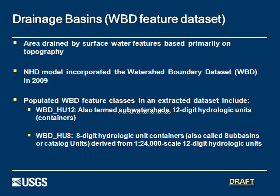Drainage basins, as far as the area of drainage, are contained in the NHD and the WBD feature set. These are what some people like to call hydrologic units, and there are three populated feature classes within the WBD: your 8-digit, 10-digit, and 12-digit HUC systems. These are basically the sub-basins, watersheds, and sub-watersheds that are populated.